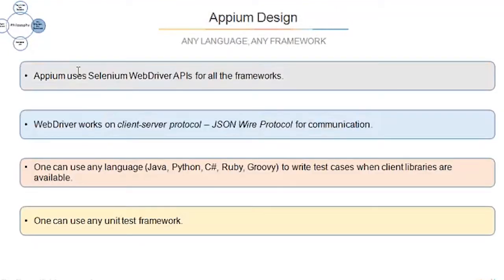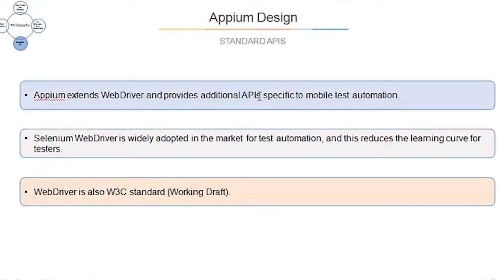Appium uses Selenium WebDriver wire APIs for all the frameworks. Appium WebDriver wire works on a client-server protocol — that is, the JSON wire protocol for communication. One can use any client libraries to write test cases, and any unit testing framework such as TestNG or JUnit. Appium extends WebDriver wire and provides additional APIs specific to mobile test automation.